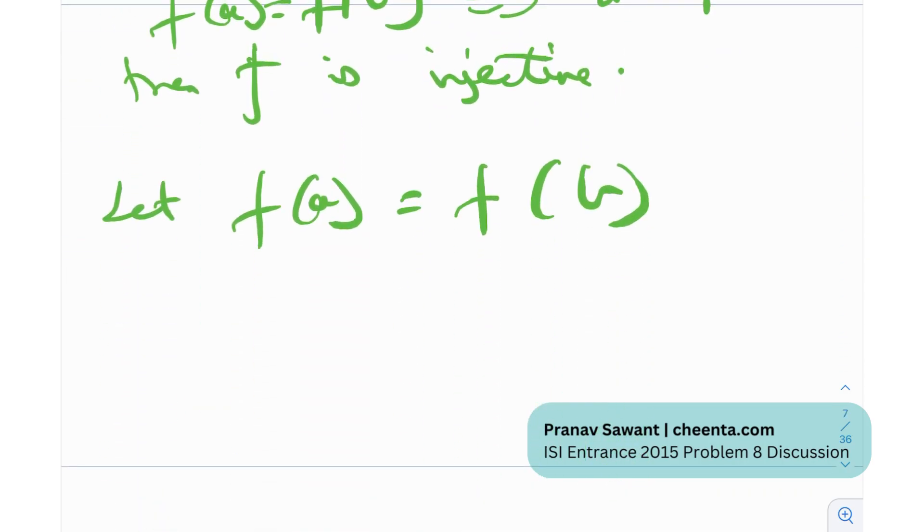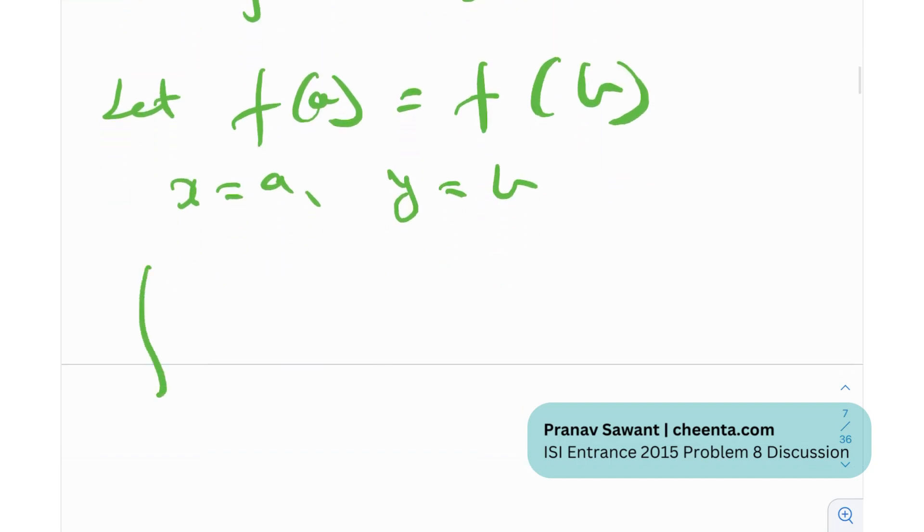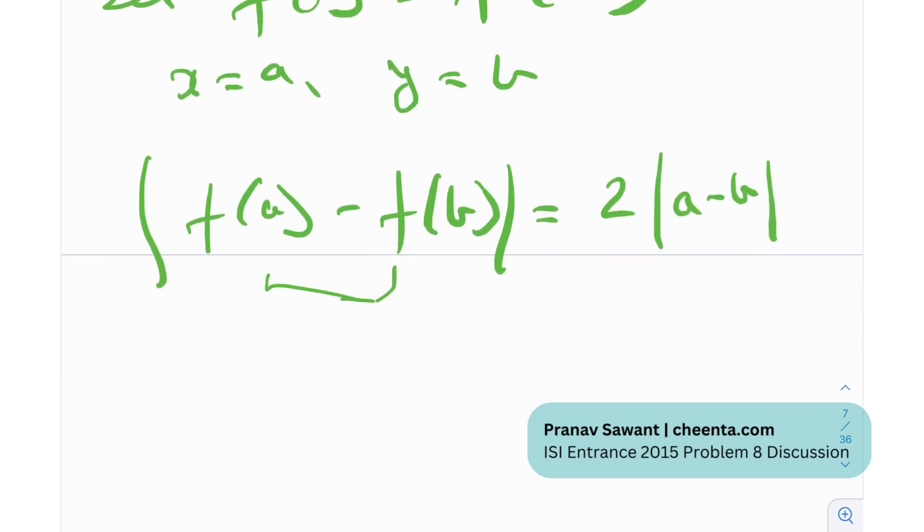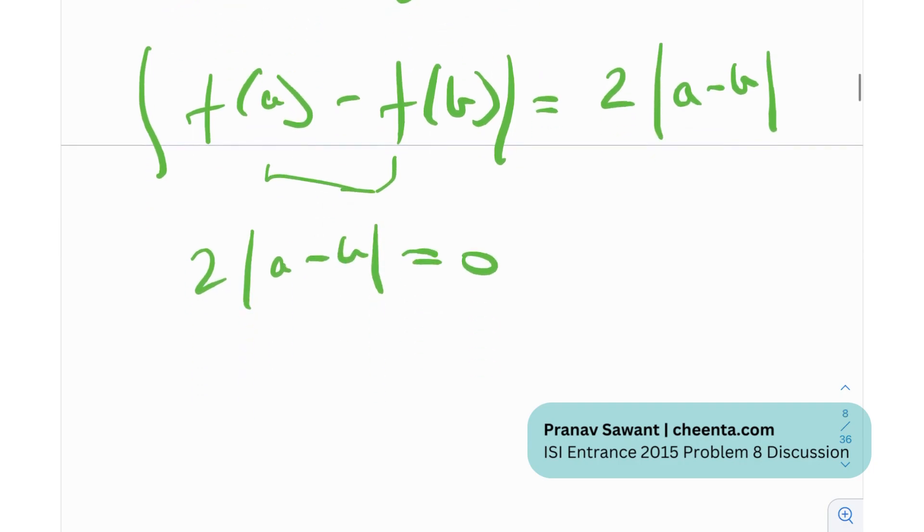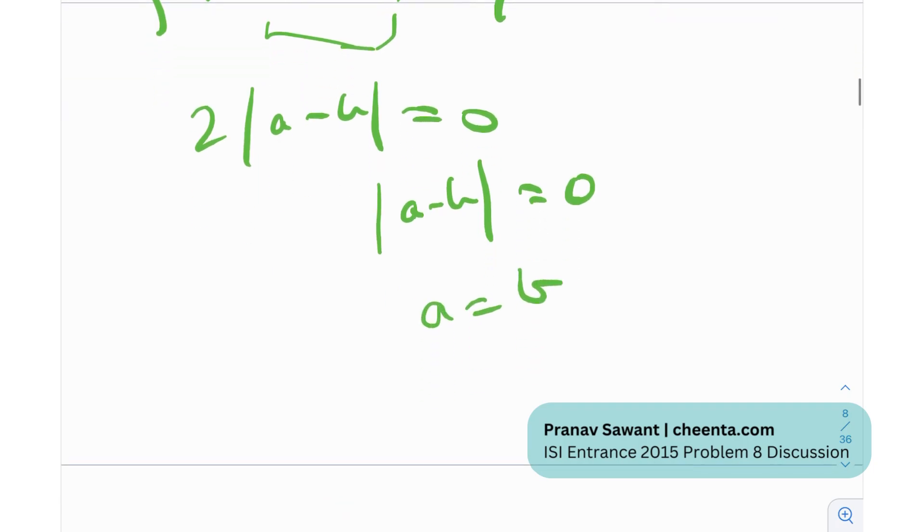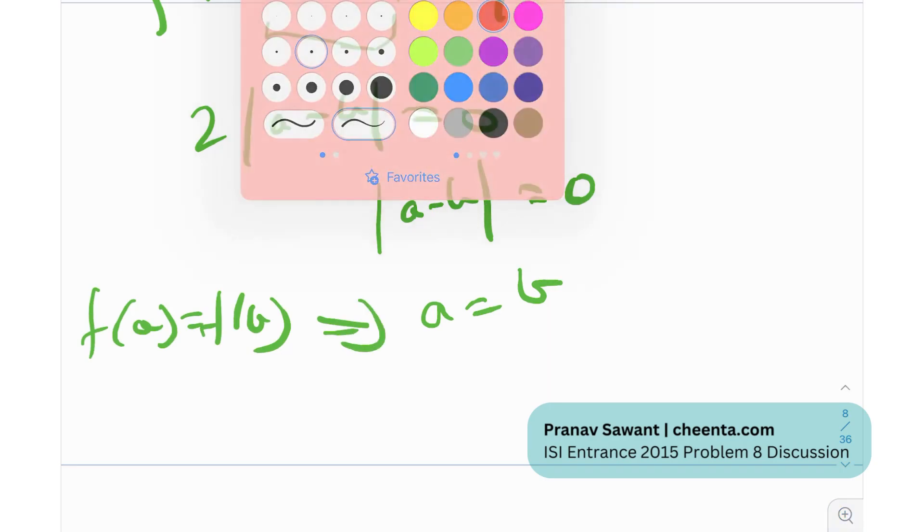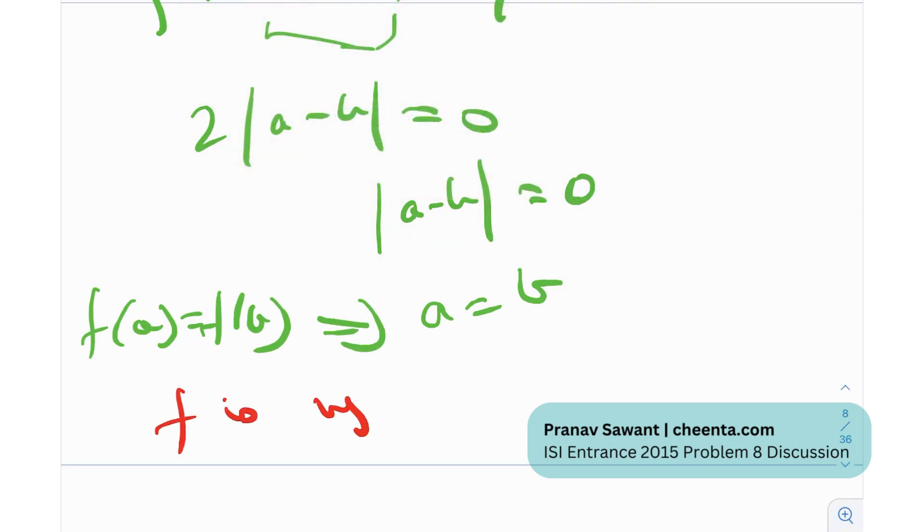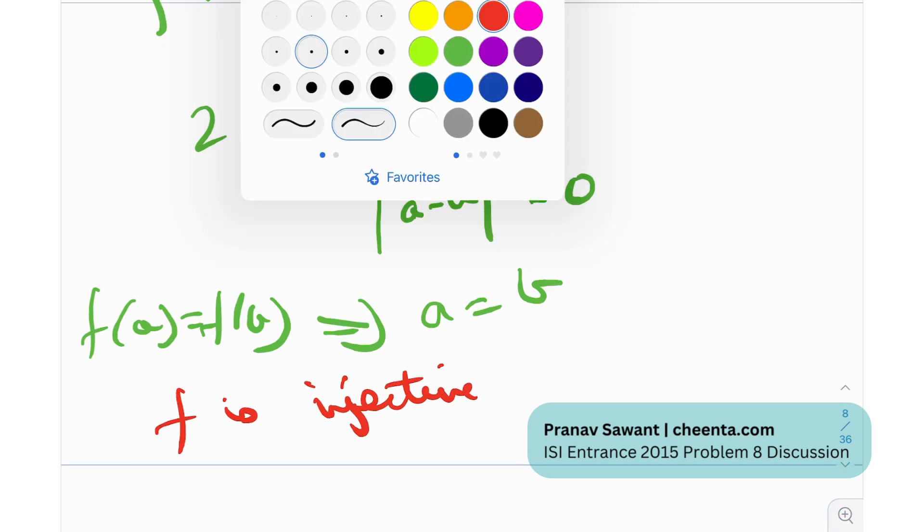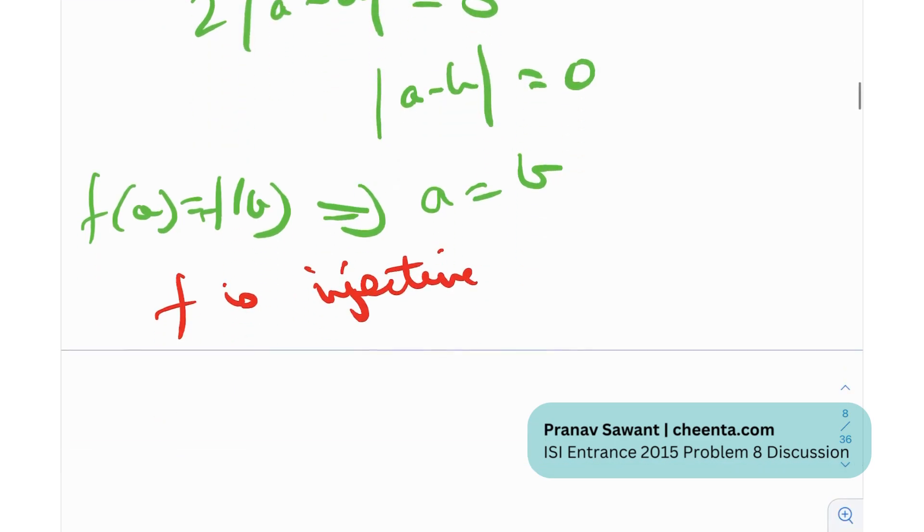So now that I've assumed f(a) equals f(b), I'm going to plug in x equal to a and y equal to b. And when I plug that into the functional equation, I get modulus of f(a) minus f(b) is equal to twice mod of a minus b. And since f(a) equals f(b), this is obviously 0. So twice mod a minus b equals 0, mod a minus b equals 0. And the only way this can happen is if a equals b. So essentially, we assumed f(a) equals f(b), and then we implied that a equals b. Therefore, I can comfortably write that f is injective.